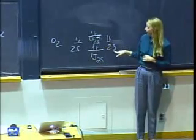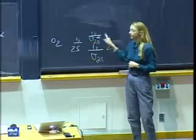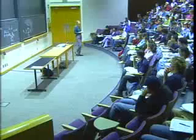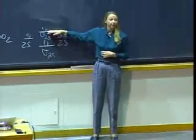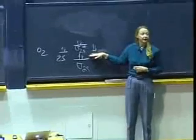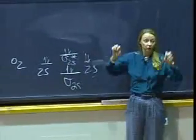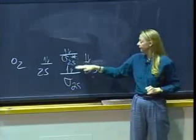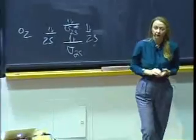When they destructively interfere, we form what we called an anti-bonding wave function, given the designation star. In the case of the 2s electrons or wave functions in oxygen, this formed the sigma 2s star wave function — the anti-bonding wave function. Its energy is higher than that of the atomic states for the two separated wave functions. The bonding state is lower in energy; the anti-bonding state is higher in energy.